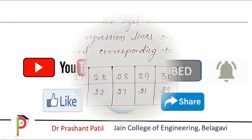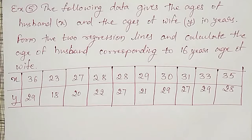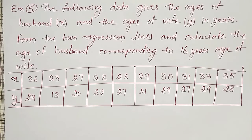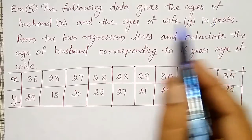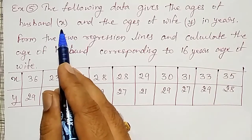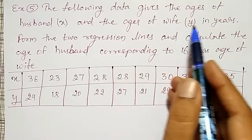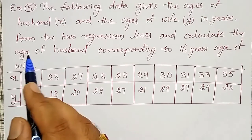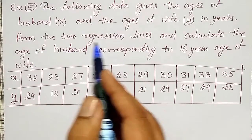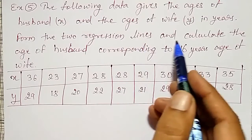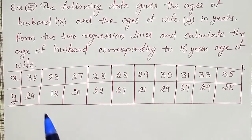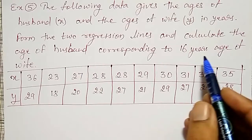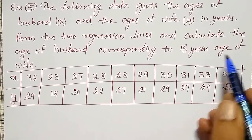I am going to solve one best example on how to fit regression lines for the ages of husband and ages of wife. The following data gives the ages of husband as X and the ages of wife as Y in years. Form the two regression lines and calculate the age of husband corresponding to 16 years age of wife.